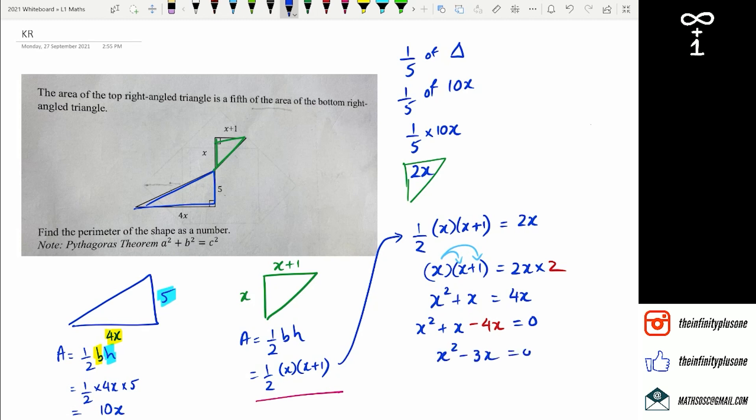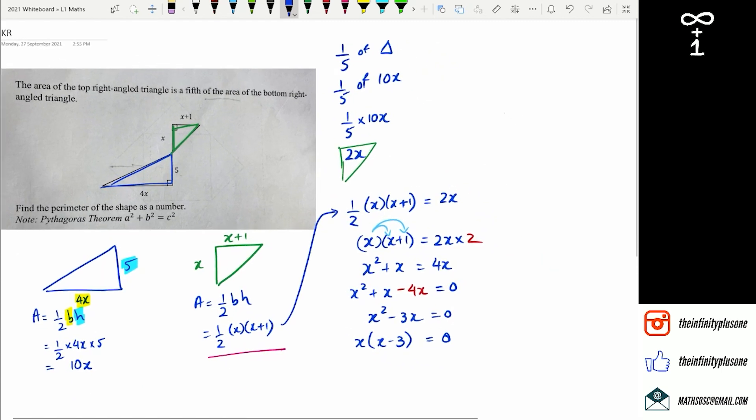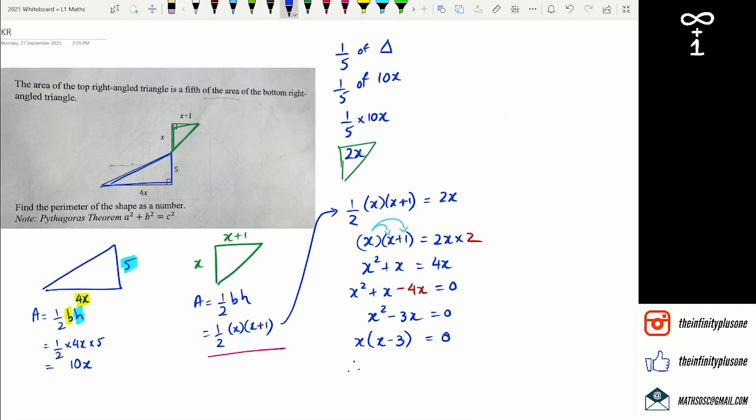And I can factorize at this point, as x is a common factor. So I'm going to get x multiplied by x minus 3 equals 0. At this point, I can say that x equals 0, or x minus 3 equals 0. In the second case, we've got x equals 3.